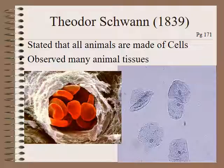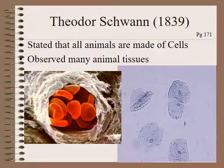Another gentleman, Theodore Schwann — who actually has a type of cell named after him called Schwann cells — stated that all animals were made up of cells as well. His work specialized in animal tissue, and you can see the different types of animal cells, including red blood cells.